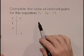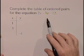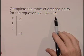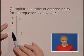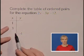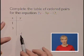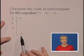Let's complete the table of ordered pairs for the equation 2x minus 3y equals 12. We have our table where our choices for x are 1 and 3, and we also have a choice listed in the y column as negative 4.